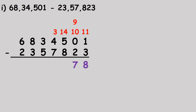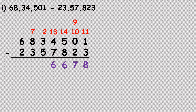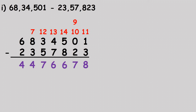We cannot subtract four from eight, so we borrow — four becomes three and the next four becomes fourteen. Fourteen minus eight is six. We cannot subtract seven from three, so we borrow again — three becomes two, and four becomes thirteen. Thirteen minus seven is six. Borrowing again from eight — eight becomes seven, two becomes twelve. Twelve minus five is seven, seven minus three is four. Six minus two is four. Final answer: forty-four lakh seventy-six thousand six hundred and seventy-eight.